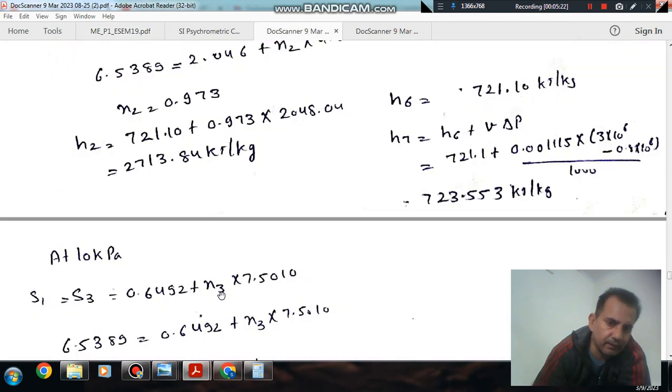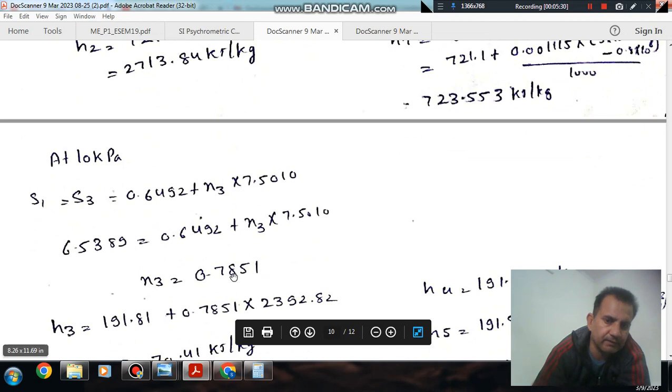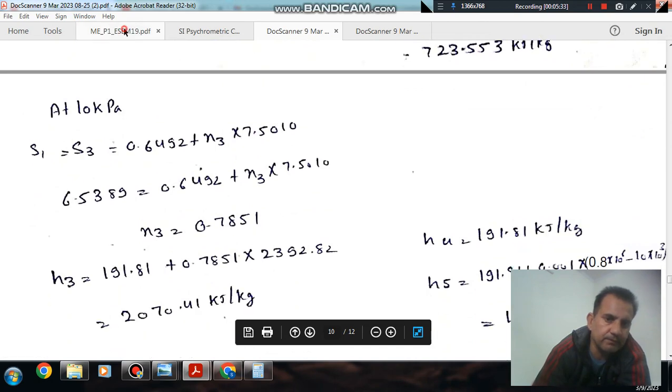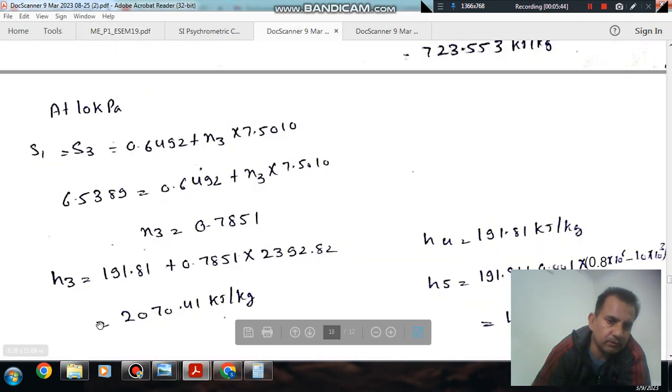Now, considering the quality at S3, when we equate entropy, we can find that x3 is 0.785. And the enthalpy at point 3, using the quality and the liquid and vapor enthalpy values, the corresponding enthalpy is 2070.41 kJ/kg. And H4 is 191.81.